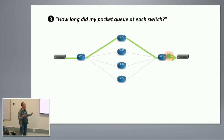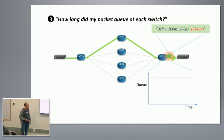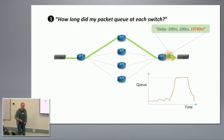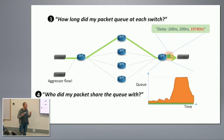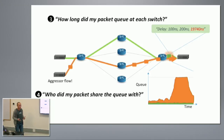The third question: how long did my packet queue at each switch — how long did it wait at every hop? Ideally it should be zero other than propagation latency dictated by the speed of light, but queue buildup happens. I want to draw a full time series to see at exactly which point significant queuing latency occurred. The last question: who did my packet share the queue with? Sometimes this huge queuing latency is not a problem I caused — it could be caused by others not abiding by the rules. For example, I'm using TCP; they're using UDP, or they're using one million connections just to get more bandwidth.